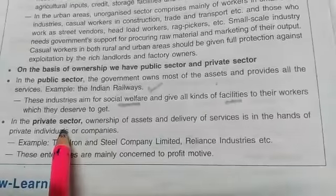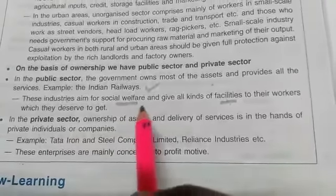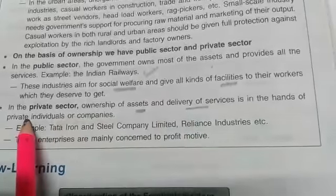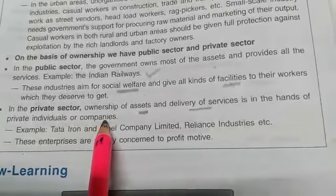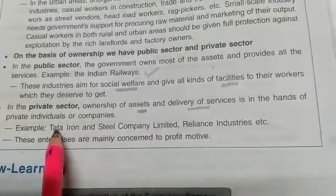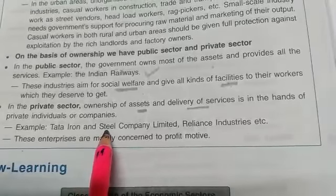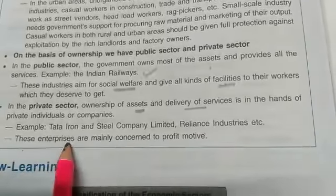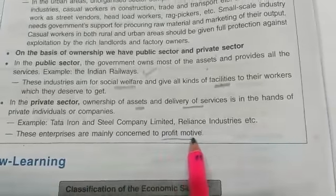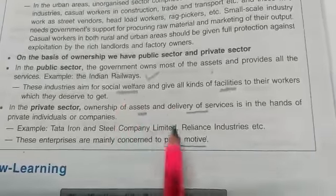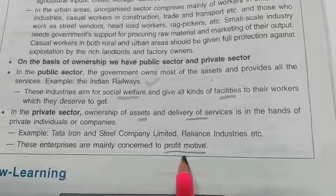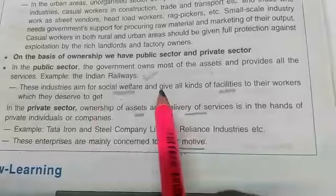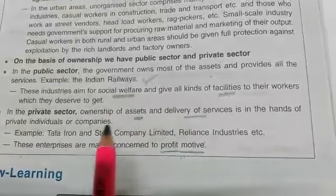In the private sector, the ownership of assets belongs to private individuals and private companies — the government does not have any role to play. Examples include Tata Iron and Steel Company Limited and Reliance. These enterprises are mainly concerned with profit motive, while public sector's motive is social welfare. So this was the classification of your sectors: primary, secondary and tertiary; organized and unorganized; public and private sector. Till then, bye.